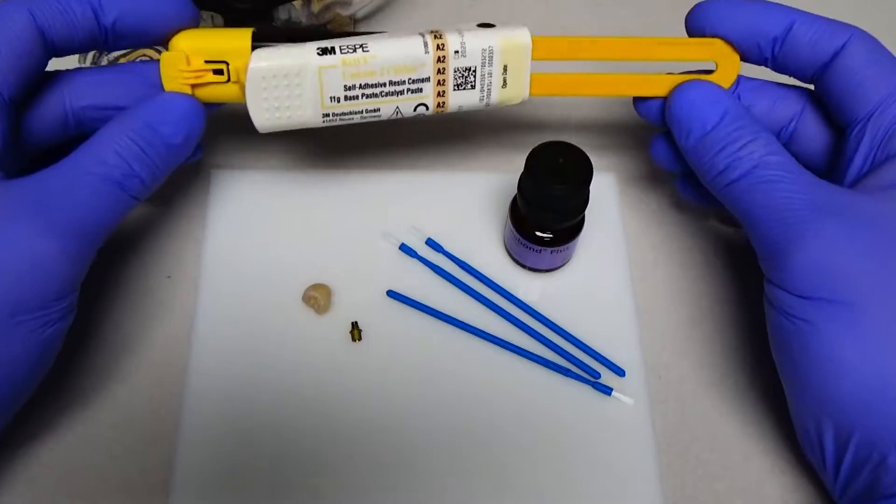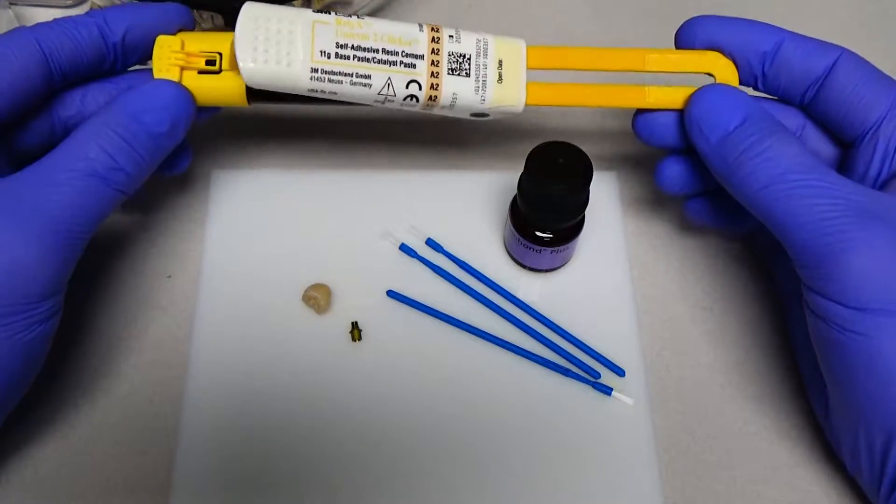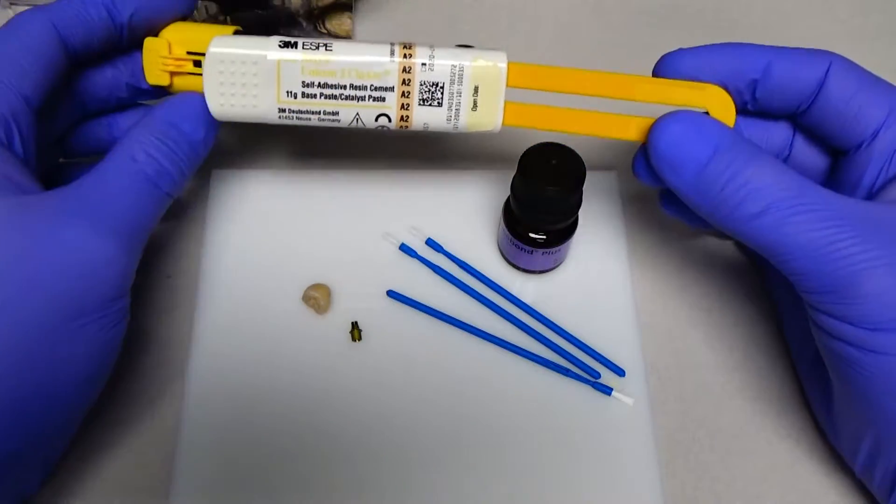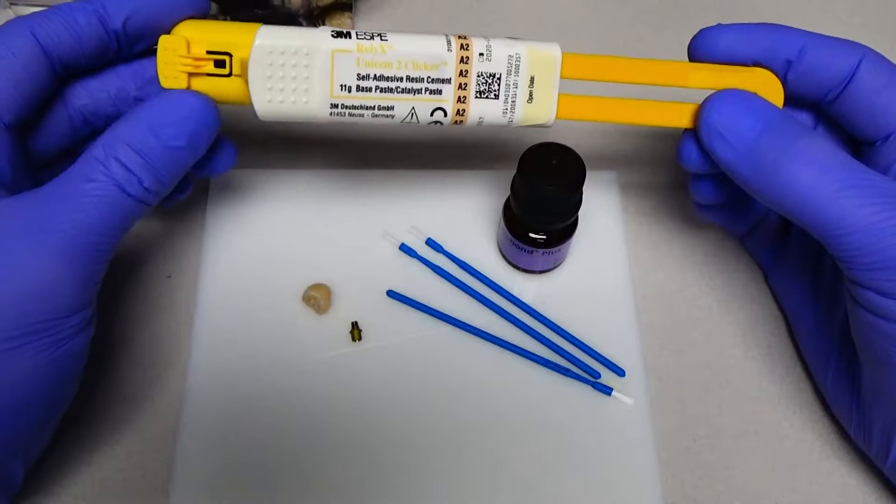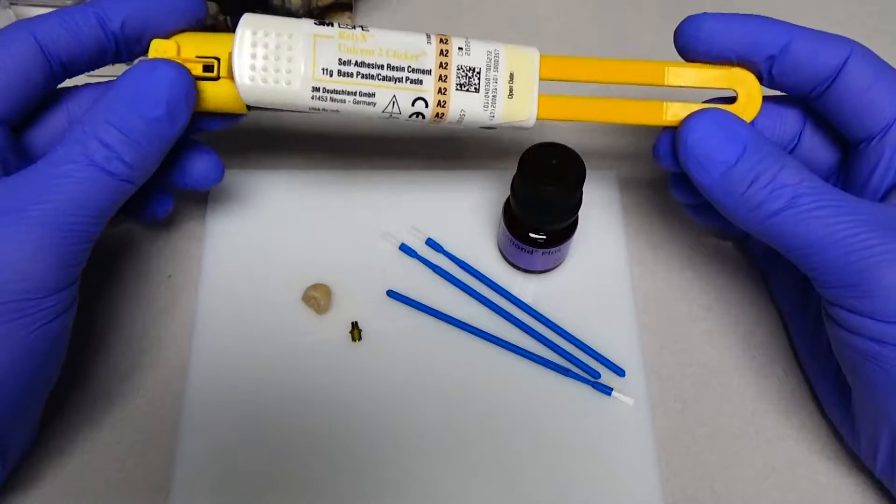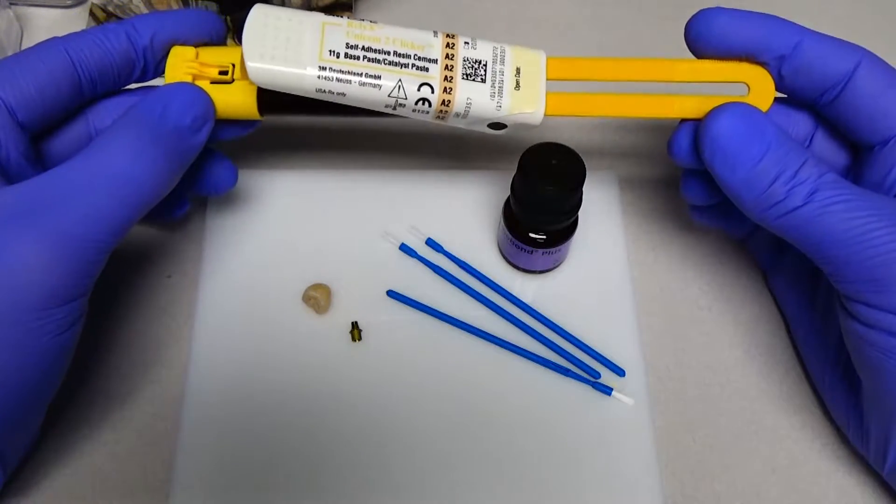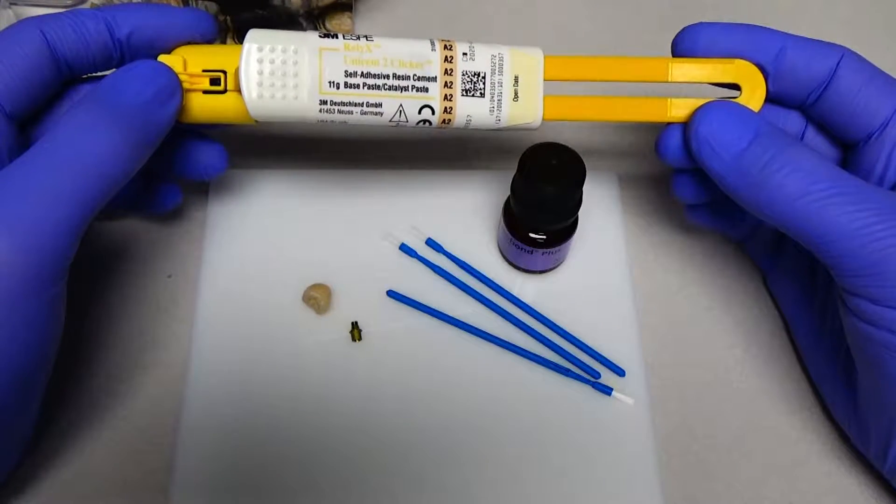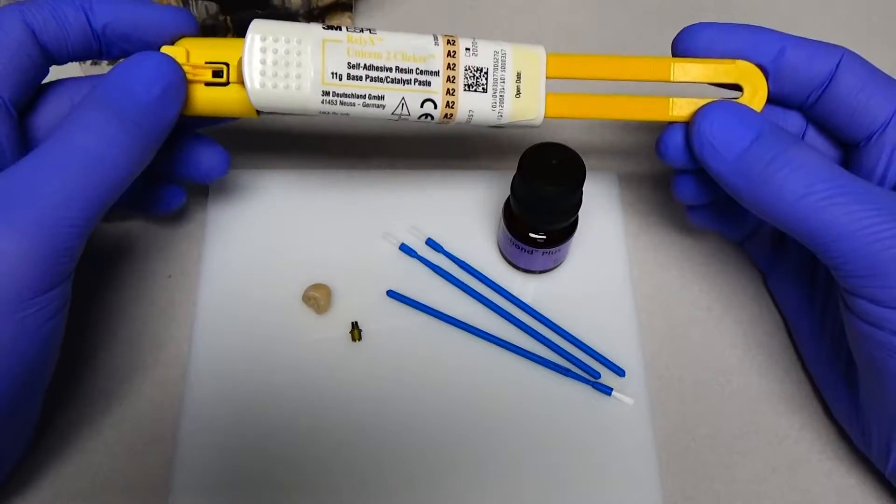And then the final thing, as far as bonding is concerned, we have our Reliax Unisem 2. And the Unisem 2 is important because the original Unisem doesn't have the MDP containing resin in it. But the Unisem 2 is actually rated for luting implant components together. There's various things from different manufacturers that you can use for this purpose.